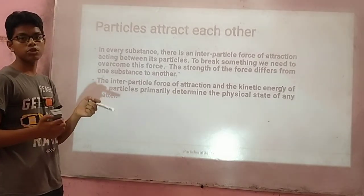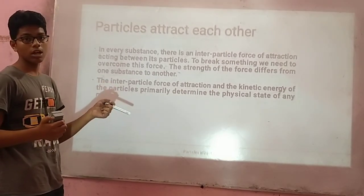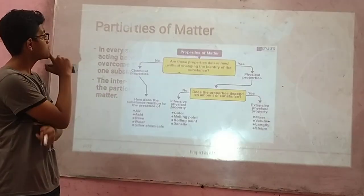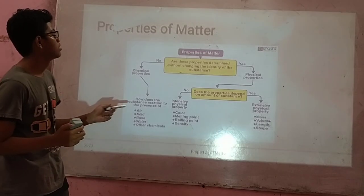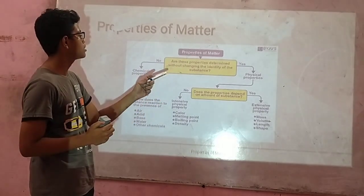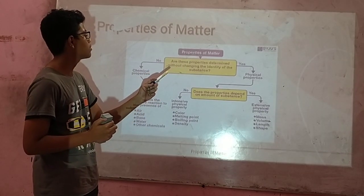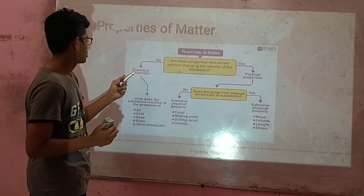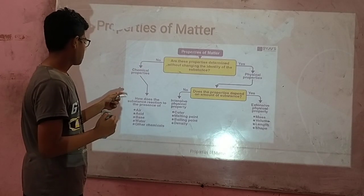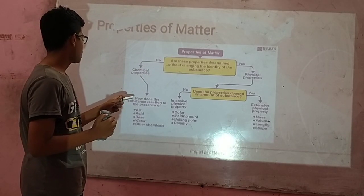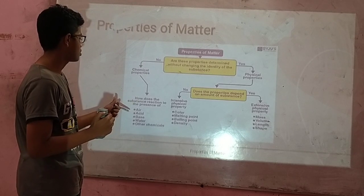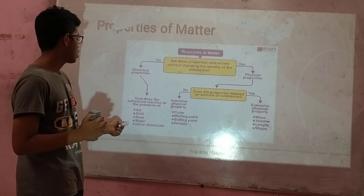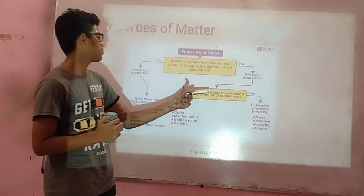Solids have the highest inter-particle force of attraction, liquids have medium, and gases have the lowest. Physical properties are those determined without changing the identity of the substance. If properties change the identity, those are chemical properties — does the matter react in the presence of air, acid, base, water, and other chemicals? If yes, those are chemical properties; if no, they are physical properties.